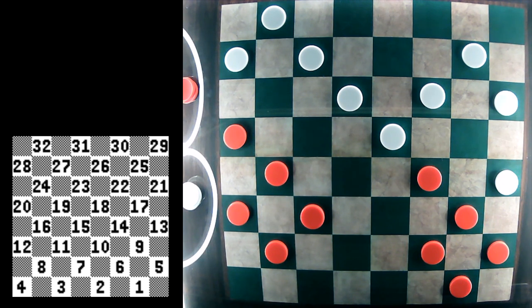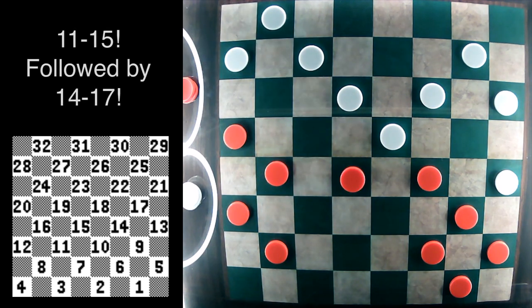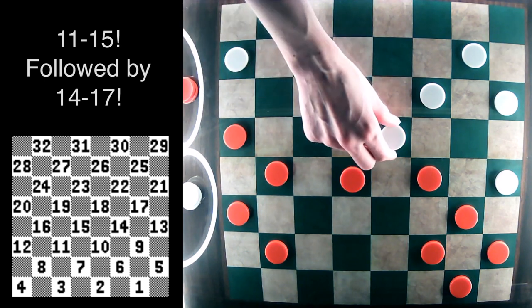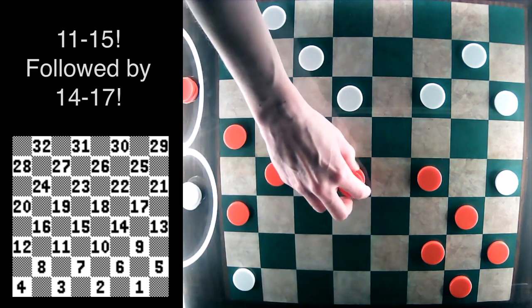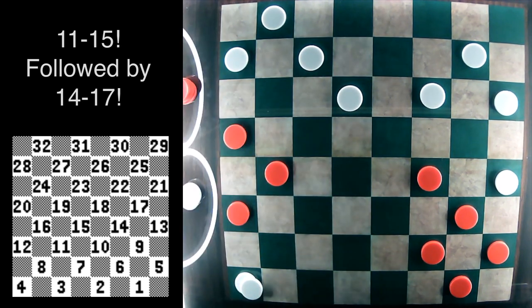And what it does is it immediately sacrifices two pieces. It plays 11-15. And you may think this is outrageous. It's allowing white to get a double jump, and it also allows white to get a king. That's all true.